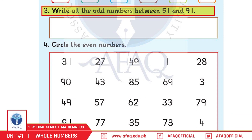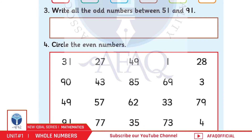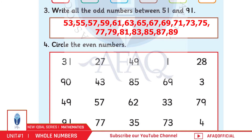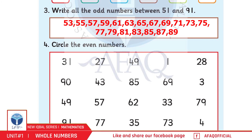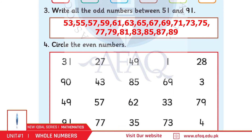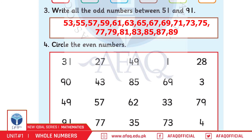Question number 3: Write all the odd numbers between 51 and 91. Answer: 53, 55, 57, 59, 61, 63, 65, 67, 69, 71, 73, 75, 77, 79, 81, 83, 85, 87, and 89.